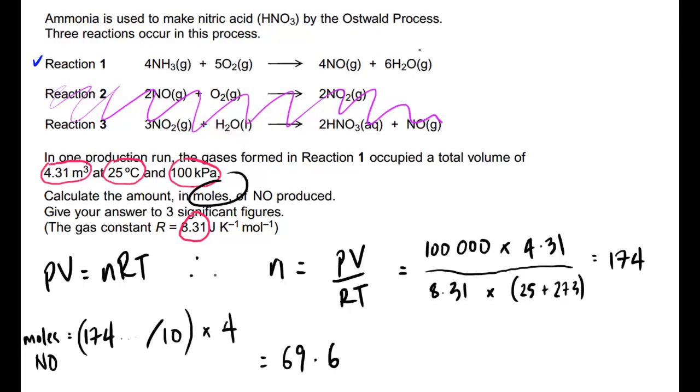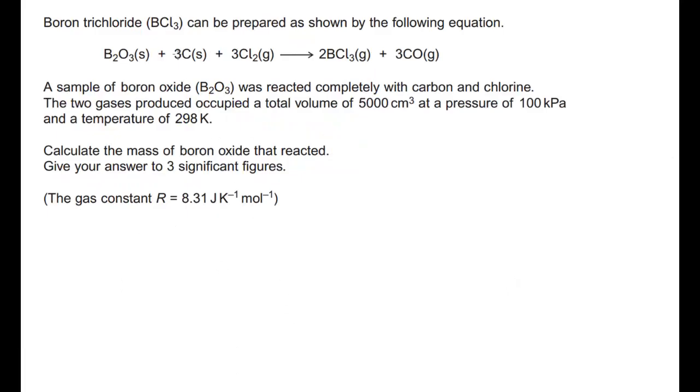OK, so let's have a look at a different question. OK, a question now about boron trichloride. So BCL3 can be prepared as shown by the following equation. A sample of boron oxide was completely reacted with carbon and chlorine. Two gases produced, occupied a total volume of 5,000 centimetres cubed, at a pressure of 100 kilopascals, and at a temperature of 298 Kelvin. There's our ideal gas. And again, we're looking to do this to three significant figures. And so we're calculating a mass. So calculate the mass of boron oxide that reacted, give our answer three significant figures.